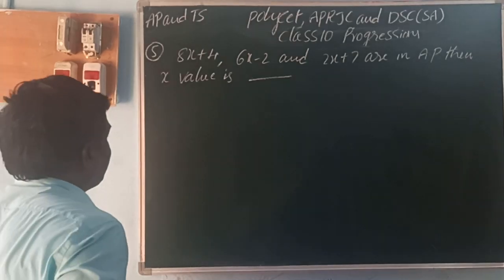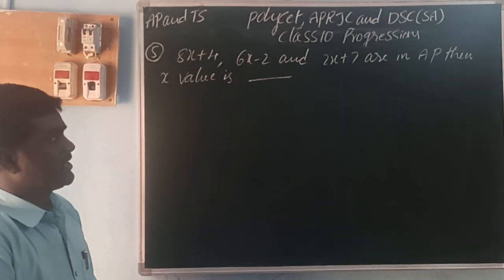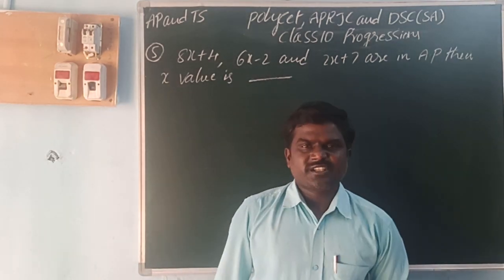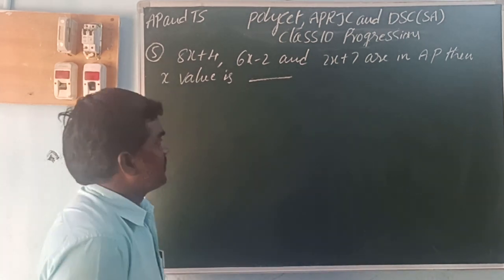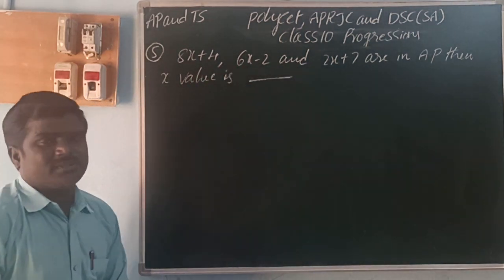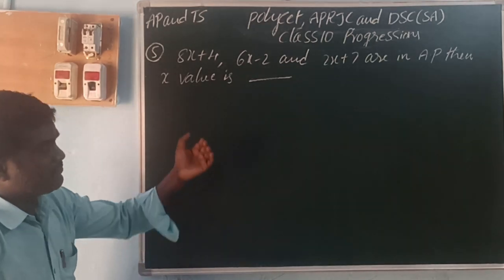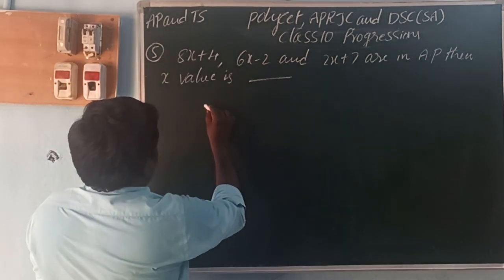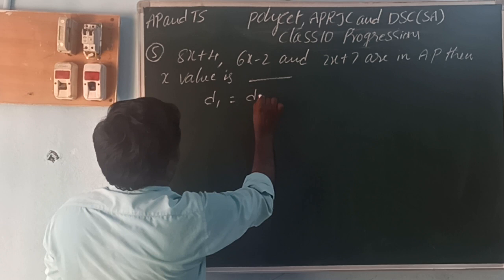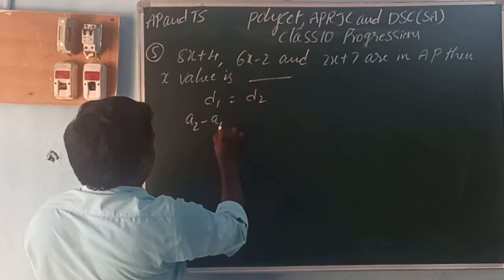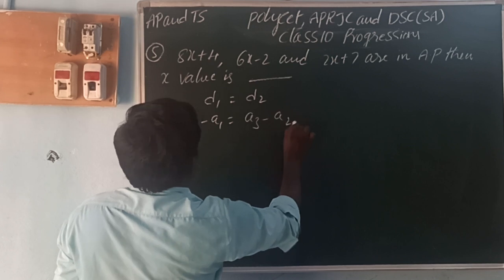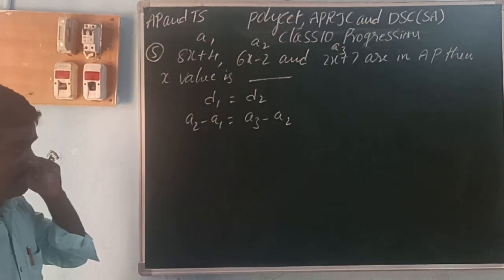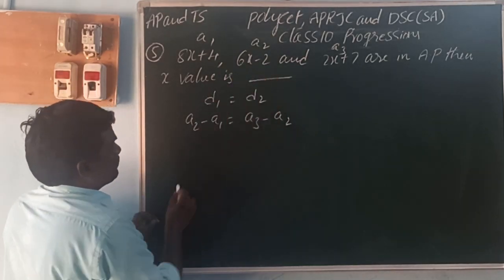Next, 8X + 4, 6X - 2, and 2X + 7 are in AP. Find X value. In AP, the common difference between two consecutive terms is same. If three terms are in AP, common differences are same. D1 = D2. D1 is A2 minus A1, D2 is A3 minus A2.